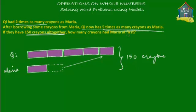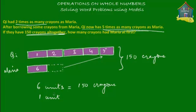How many crayons had Maria at first? Let's first find out how much each purple block is worth. How many purple blocks do we have? One, two, three, four, five, and six — we have six purple blocks. So six units is equal to 150 crayons. If six units equals 150 crayons, then one unit equals 150 divided by six, which is 25. So each purple block is equal to 25 crayons.